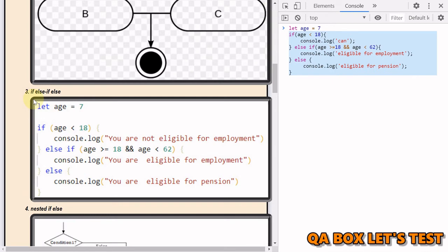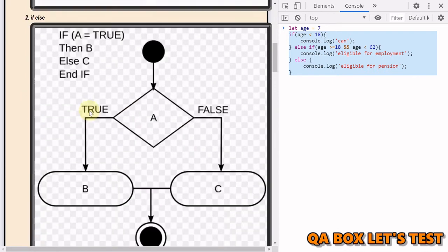But you know that if you just have one condition that you want to verify and accordingly do something, and there are not many more conditions associated in your program, then you don't need to worry about that. So in this particular case, what we are going to see here is depending upon the age of the person, we are going to say whether the person is eligible for employment or not, or eligible for pension.